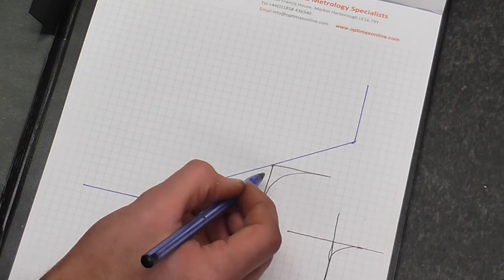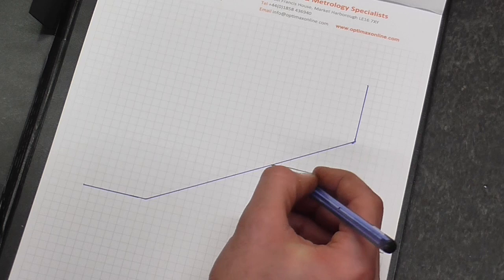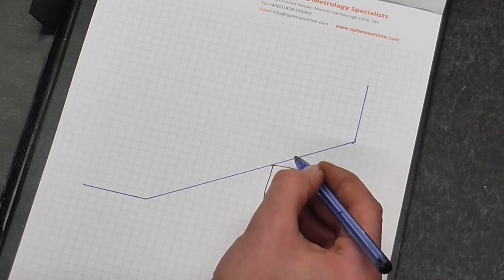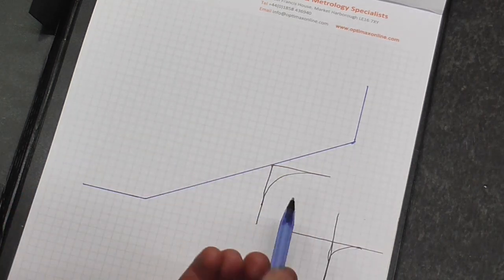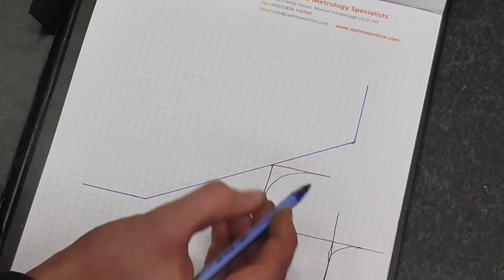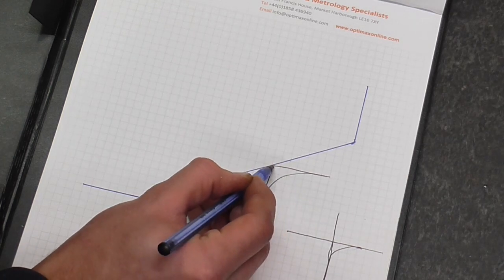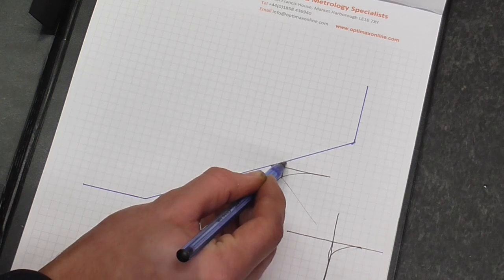So there's a bit of maths involved to calculate the additional in-feed required. If you imagine here, if I'm feeding in with a cross slide I need to actually feed in that distance there.